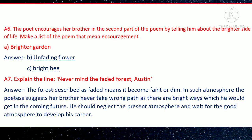Question A6: The poet encourages her brother in the second part of the poem by telling him about the brighter side of life. Make a list of words from the poem that show encouragement. The words are: first, 'brighter garden'; second, 'unfading flower'; and third, 'bright bee.'